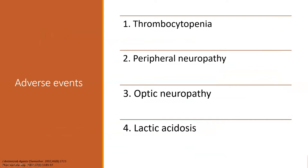Adverse events associated with long-term therapy are all dose-dependent, and they also increase the longer the therapy is continued. Thrombocytopenia, which is the most common long-term adverse event, has an incidence anywhere from 10% to 100% depending on the literature, and can occur as soon as one week after therapy is initiated. Peripheral neuropathy, optic neuropathy, and lactic acidosis usually take longer to occur, usually on the magnitude of months, so those are generally much less common to encounter.